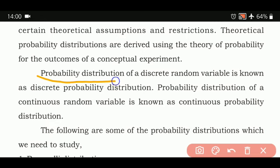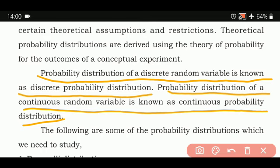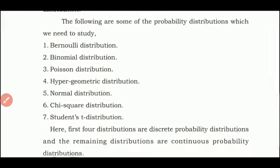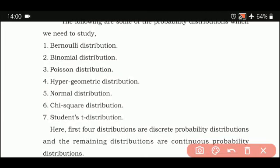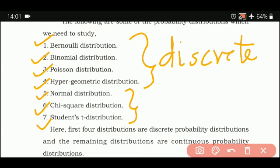The probability distribution of a discrete random variable is known as discrete probability distribution, and the probability distribution of a continuous random variable is known as continuous probability distribution. You will study seven distributions: Bernoulli, binomial, Poisson, and hypergeometric distributions — which deal with discrete random variables — and normal, chi-square, and Student's t-distribution — which deal with continuous variables.